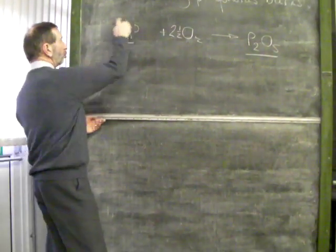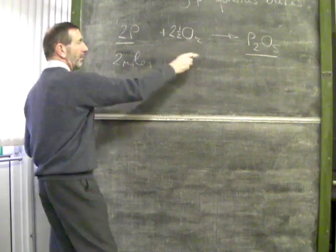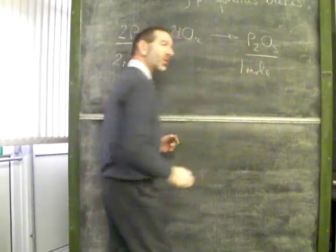According to this equation, 2 lots of phosphorus, 2 moles of phosphorus, produce 1 mole of phosphorus oxide.